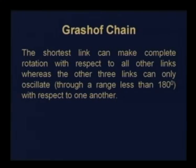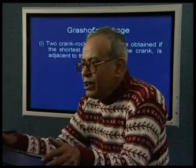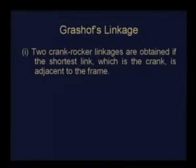If the chain satisfies Grashof's criterion, we call it a Grashof chain. In a Grashof chain, the shortest link can always make complete rotation with respect to all other links, whereas the other three links can only oscillate with respect to one another, and this oscillation is always less than 180 degrees. In a Grashof linkage, two crank-rocker linkages are obtained if the shortest link — which is the crank — is adjacent to the frame, making the shortest link become the crank.